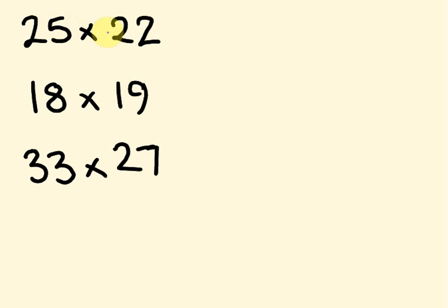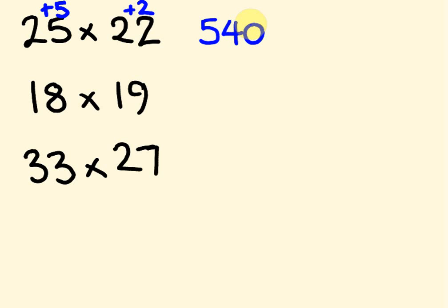For 25 times 22 using base 20: 25 is 5 above, 22 is 2 above. Cross addition: 25 plus 2 is 27. Double it: 54, so 540. Then 5 times 2 is 10. So 540 plus 10 gives 550.